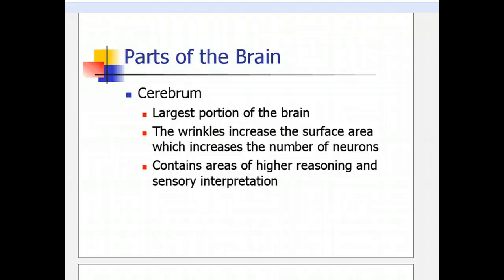What the cerebrum does is it contains areas of higher reasoning. Anytime you're thinking about something — like learning about math — that would be using your cerebrum. If you're planning what to do tomorrow, that would also be using your cerebrum, since planning is a higher level of reasoning. Your cerebrum is also the part of your brain that analyzes information you're receiving from your eyes and determines what an object is.